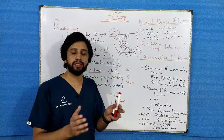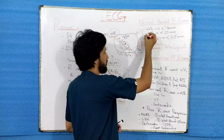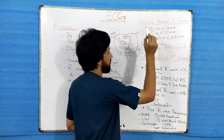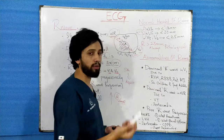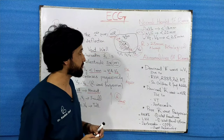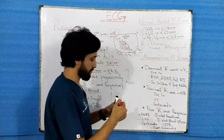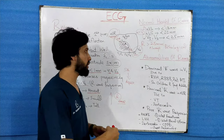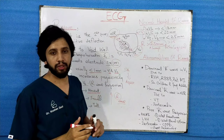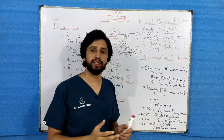Before discussing abnormalities of the R wave, remember these normal values: In AVL, the R wave is less than 13 mm; in AVF, less than 20 mm; and in V5 and V6, the R wave should be less than 25 mm. Whenever the height of the R wave is greater than 25 mm — greater than 25 small square boxes — it is pathological.